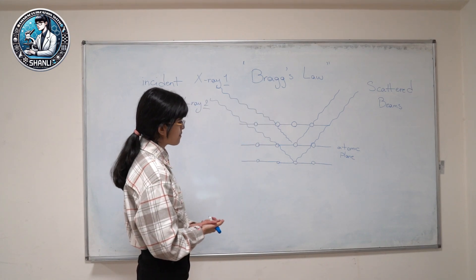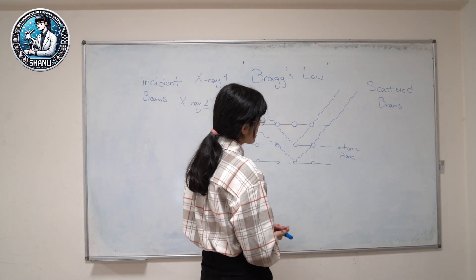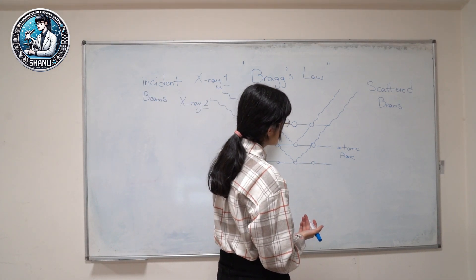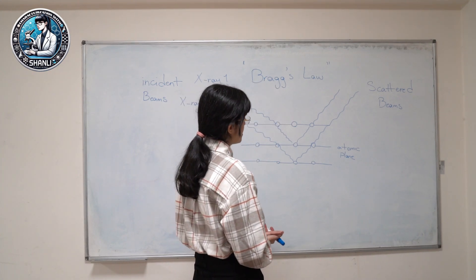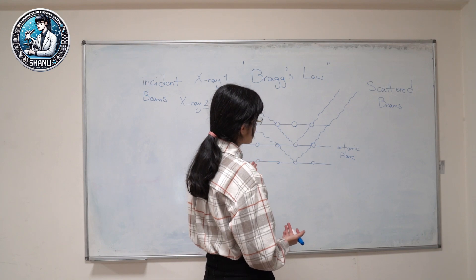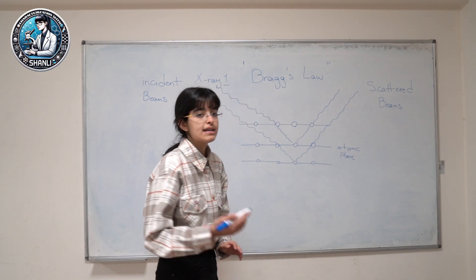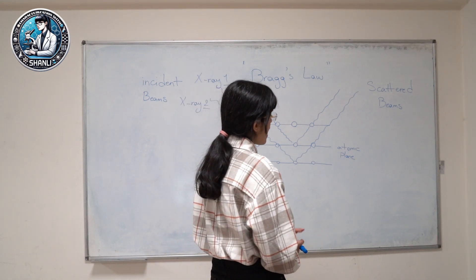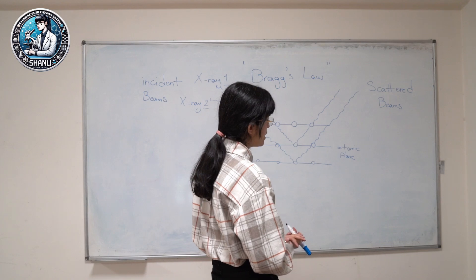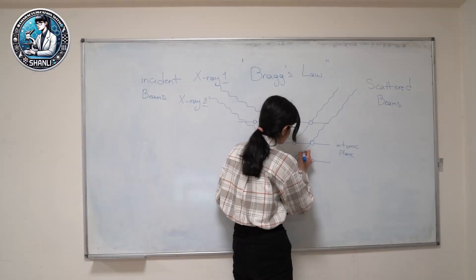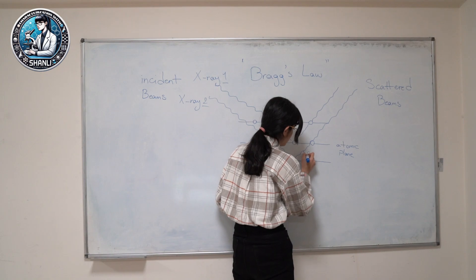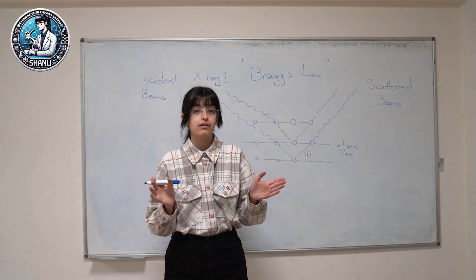All the atoms in the beam's path contribute to scattering X-rays. However, the focus of X-ray diffraction is on the peaks formed by the constructive interferences of scattered X-rays, as they provide critical information about the sample's structure. So this angle, theta, is our diffraction angle.